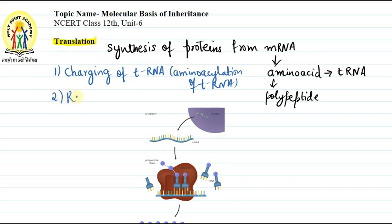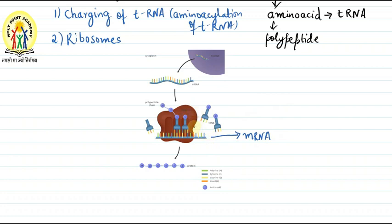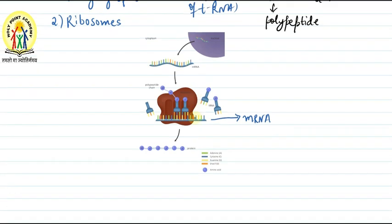The second important component is ribosomes. Ribosomes act as a workbench for translation — all the work of translation happens on the ribosomes. Ribosomes have two subunits: a large subunit and a small subunit. The small subunit of the ribosome comes in contact with the mRNA, and at that point the process of translation begins.